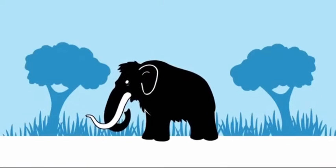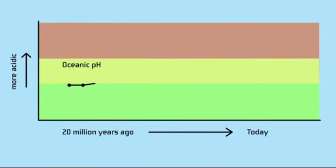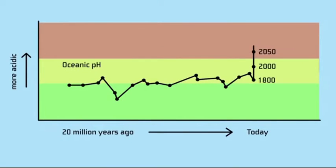But why panic, right? Life always seems to find a way to adapt. But it needs time. In a few decades, we might make the oceans more acidic than they've been in 20 million years. It's hard to imagine any ecosystem quickly adapting to that big of a change.